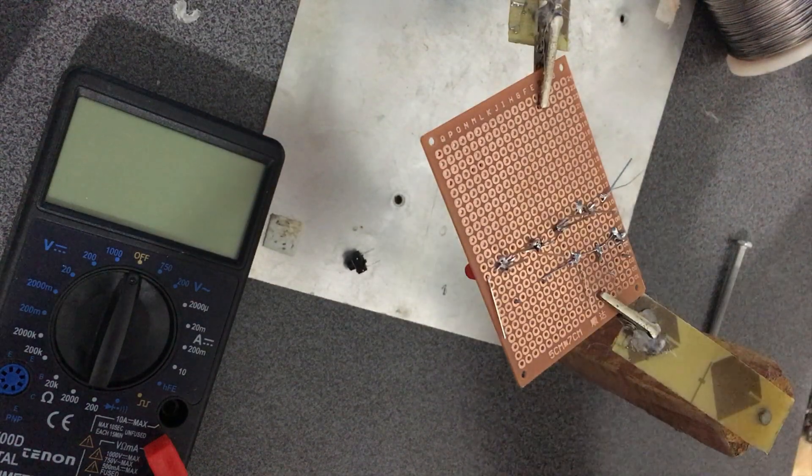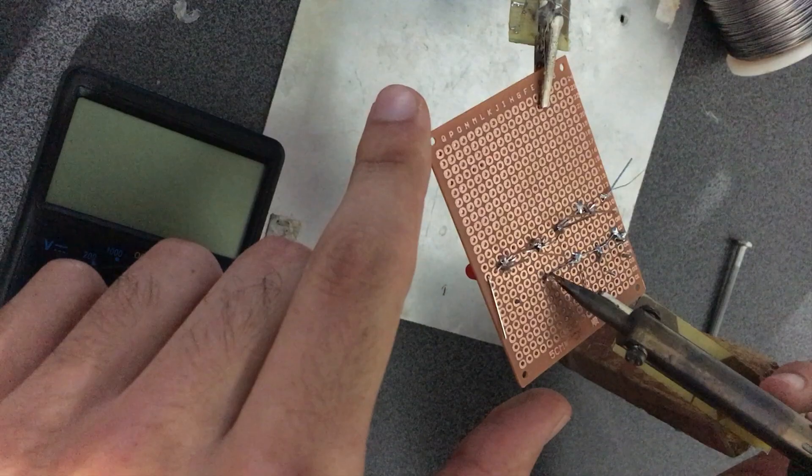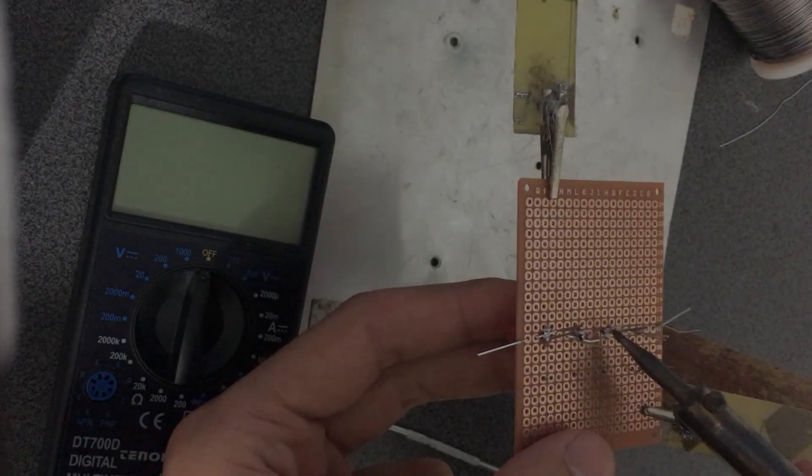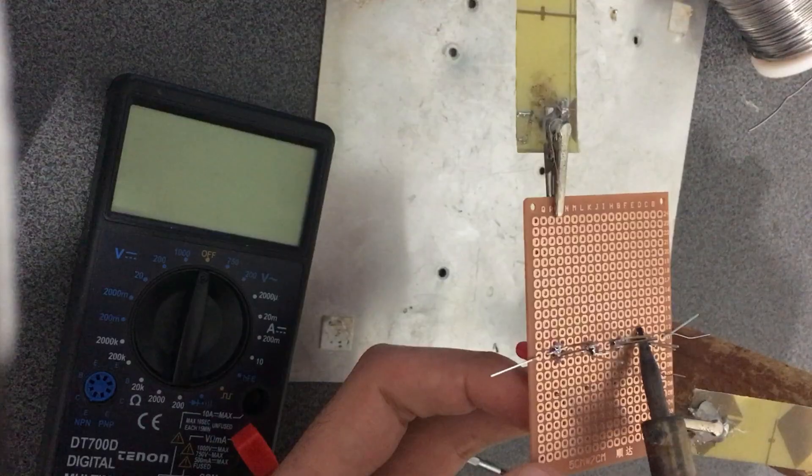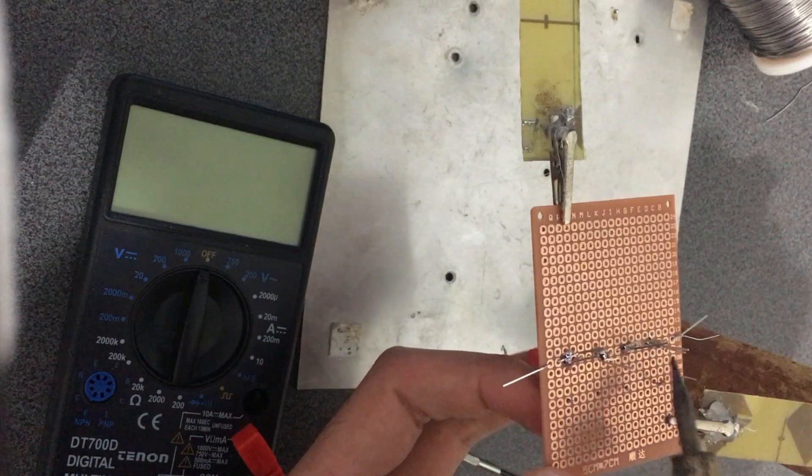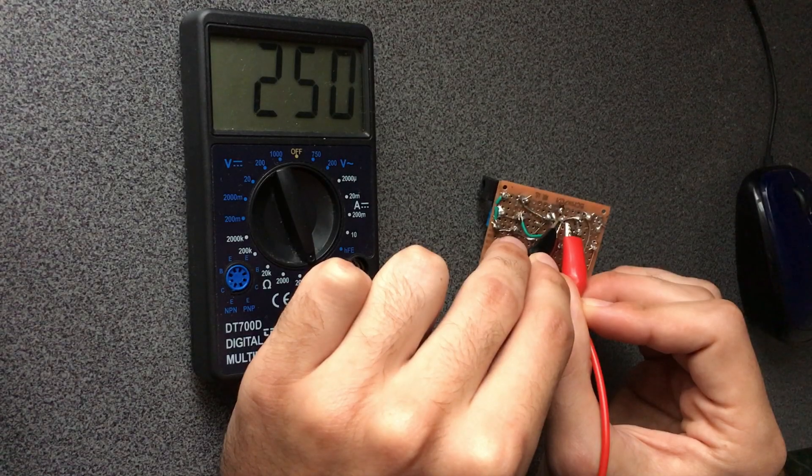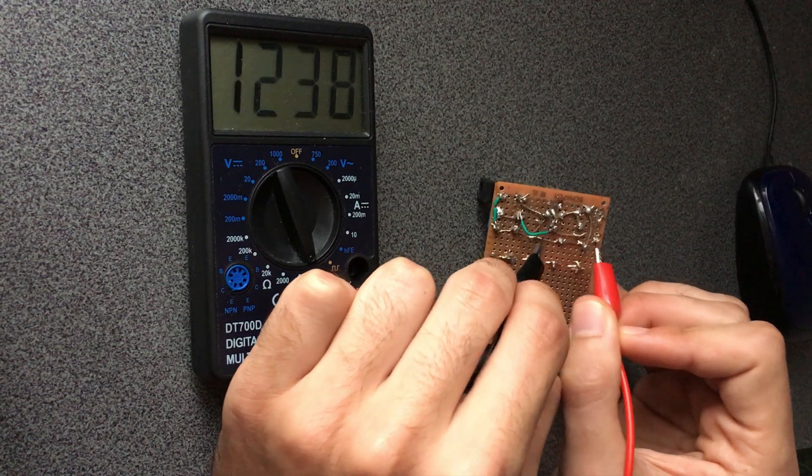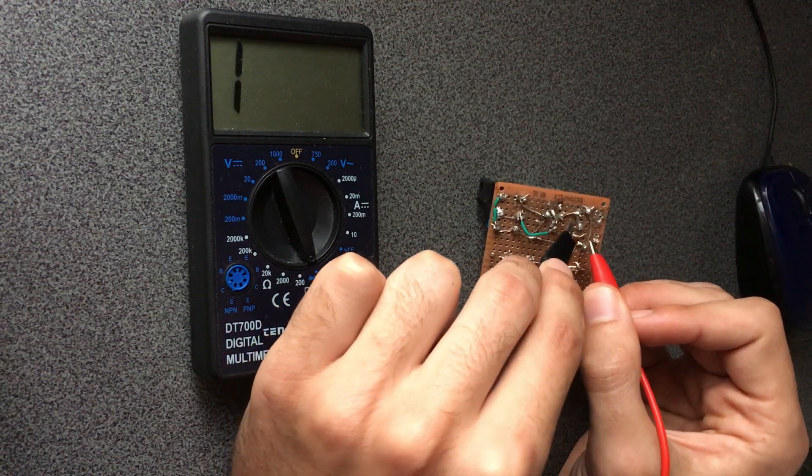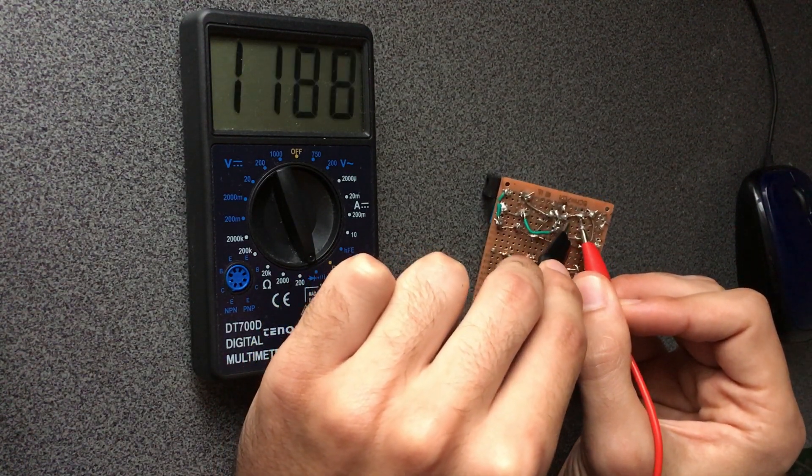After making sure that everything worked fine, I transferred the circuit into a perfboard so I can use it permanently. So after soldering all the necessary components, I checked the connections using the continuity property of my multimeter so I don't burn anything when running the circuit.